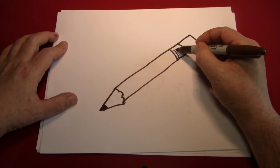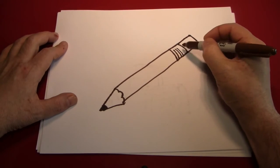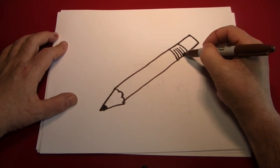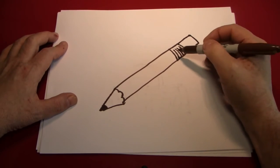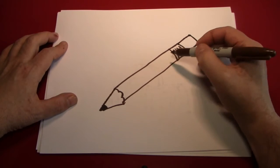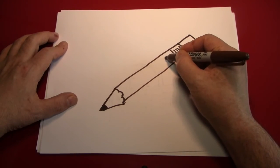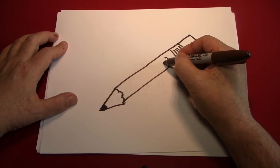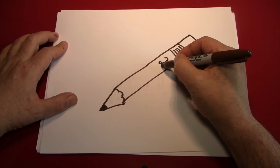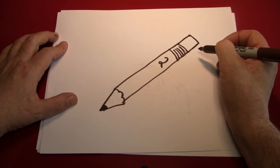Let's make some lines going through the metal part to indicate that that's in fact what it is. That little metal band that connects the eraser to the pencil. And then put a little number two, so we know that this pencil is good enough to take the SATs with.